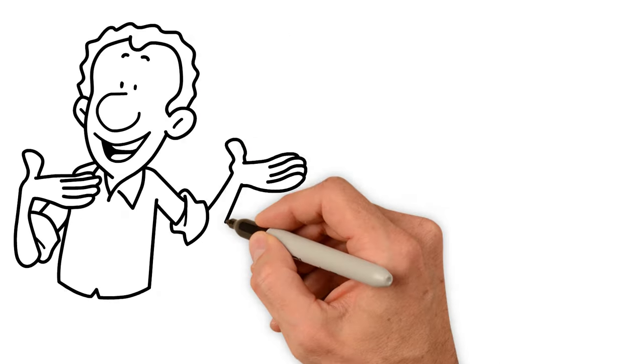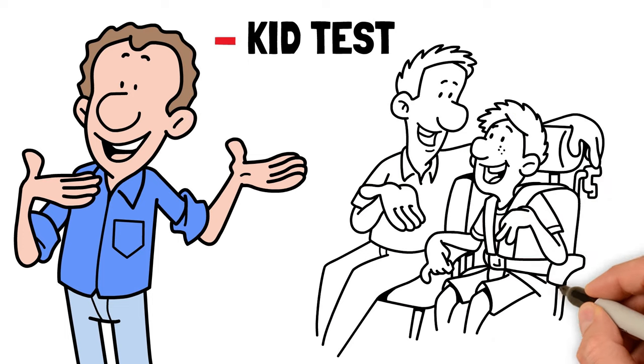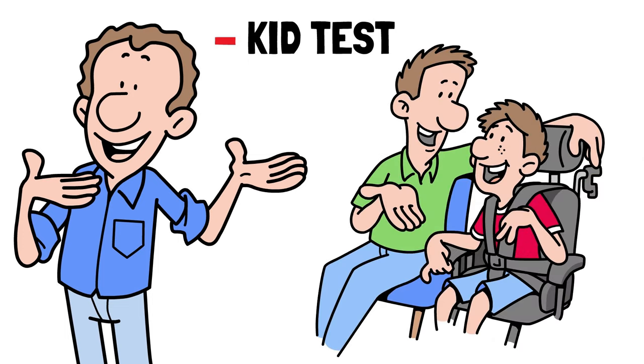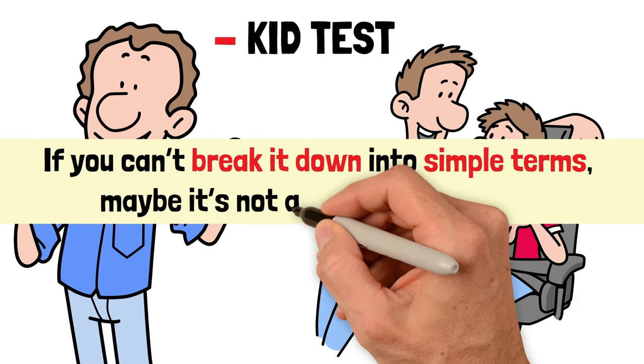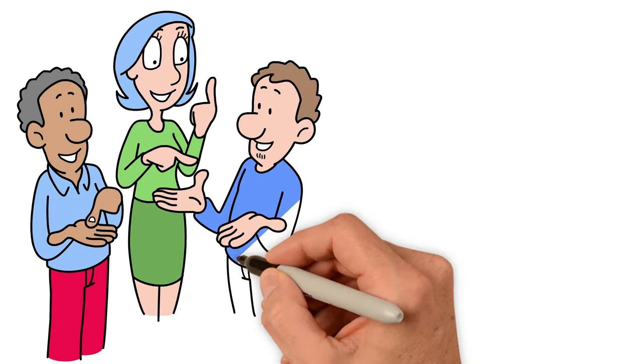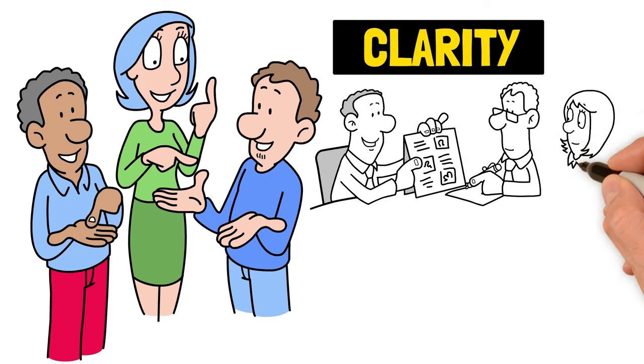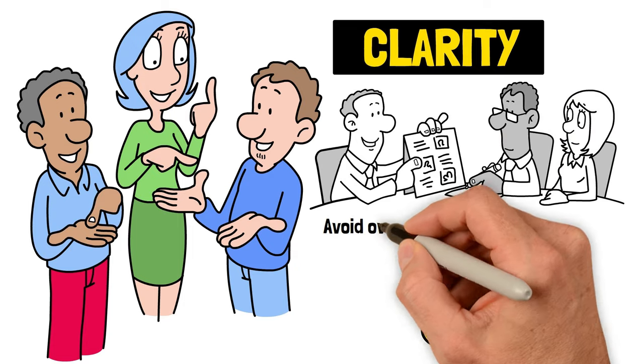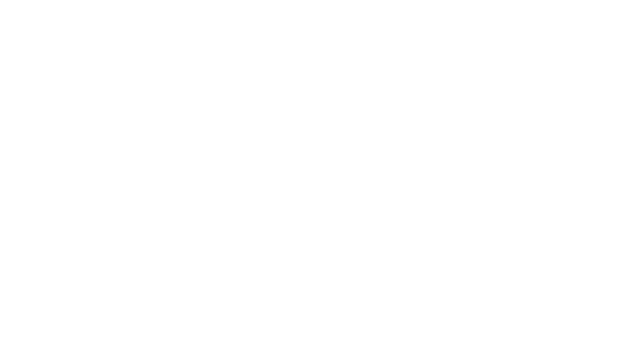Next, he uses what I like to call the kid test. If he can't explain the investment idea to a 7-year-old in 2 or 3 minutes, it's a no-go. This might sound a bit extreme, but if you can't break it down into simple terms, maybe it's not as solid as it seems. And finally, Pabrai insists that the idea should be painfully obvious even to the village idiot. This isn't about being derogatory, it's about emphasizing clarity. The potential of the stock should be so evident that anyone can see it. This helps avoid overly complicated investments that might be hiding risks or uncertainties.